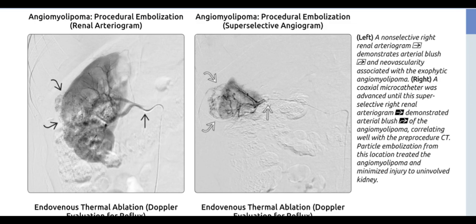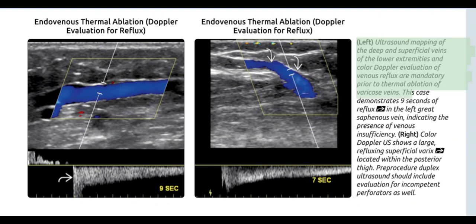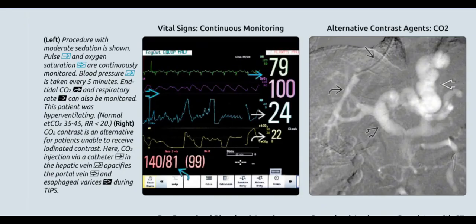Ultrasound mapping of the deep and superficial veins of the lower extremities and color Doppler evaluation of venous reflux are mandatory prior to thermal ablation of varicose veins. This case demonstrates nine seconds of reflux in the left great saphenous vein, indicating venous insufficiency. Color Doppler ultrasound shows a large refluxing superficial vein located within the posterior thigh. Pre-procedure duplex ultrasound should include evaluation for incompetent perforators as well.